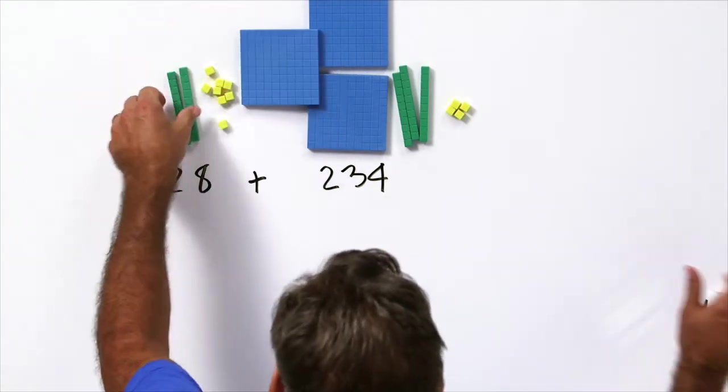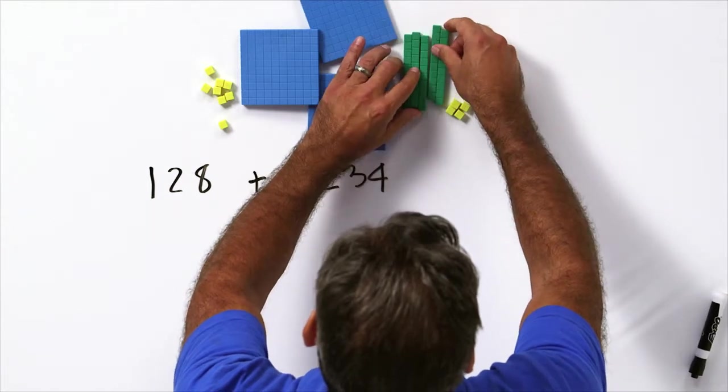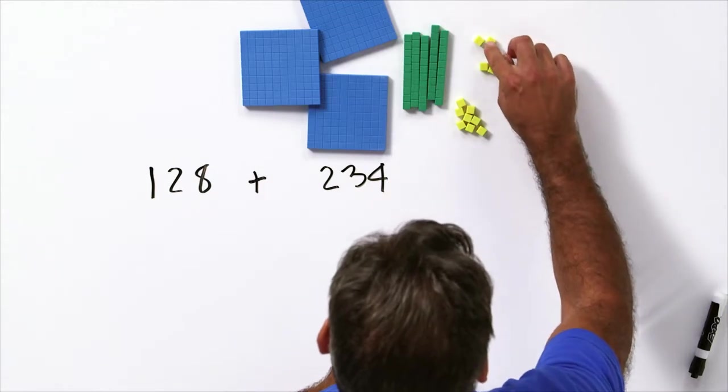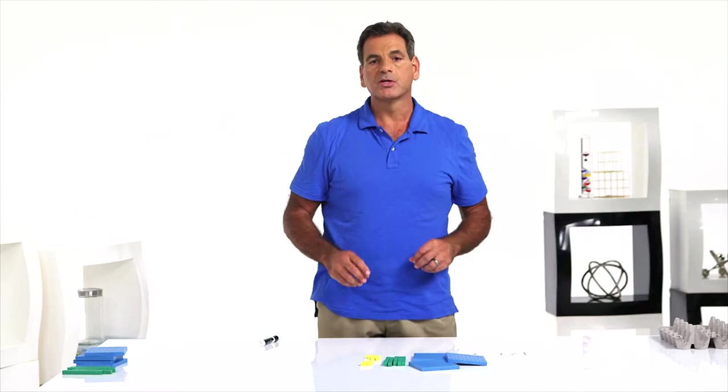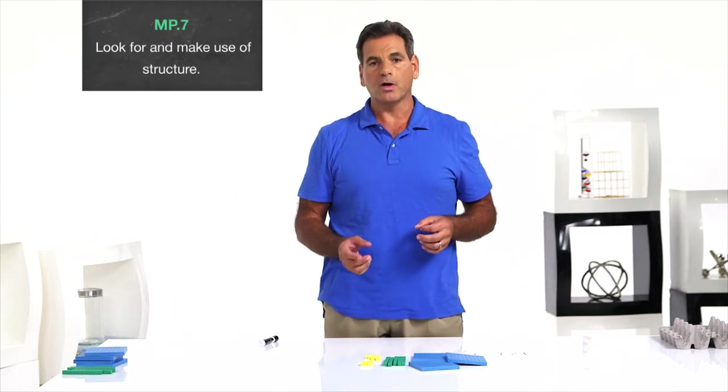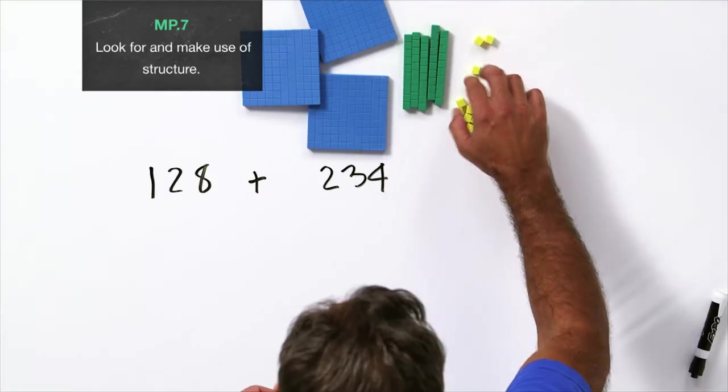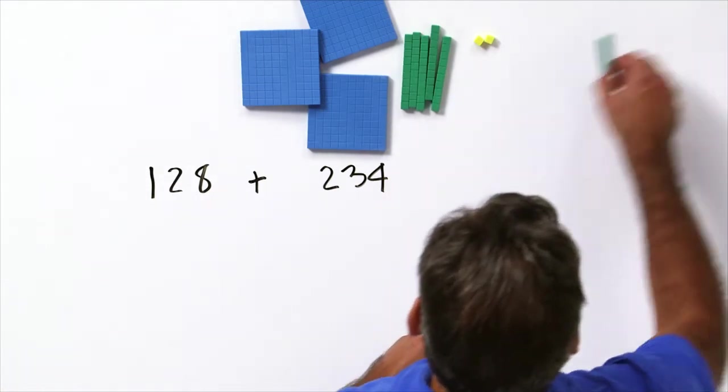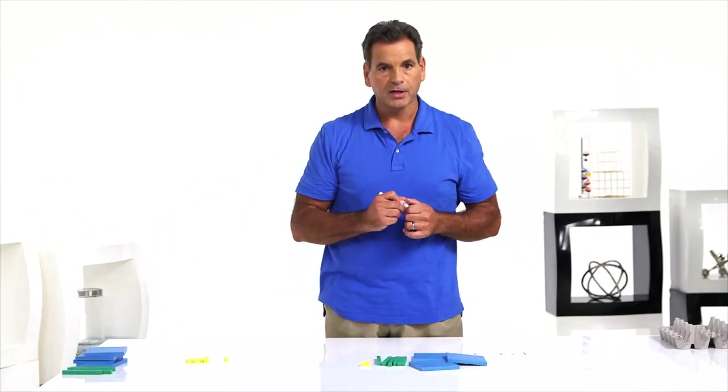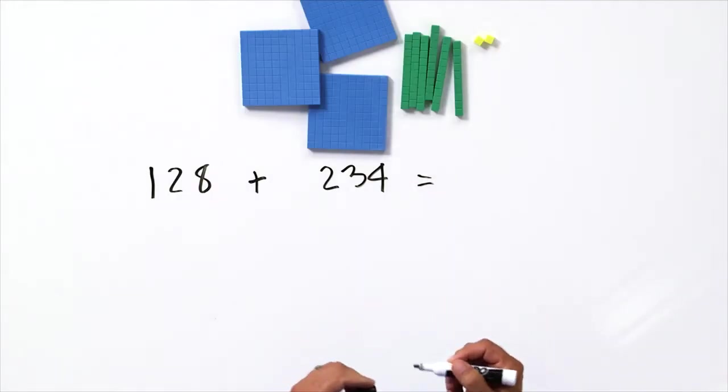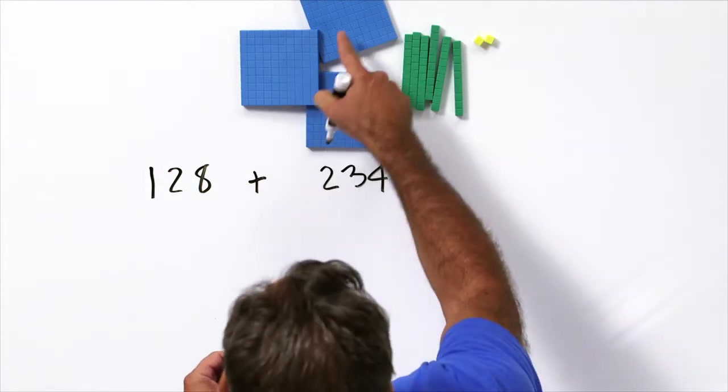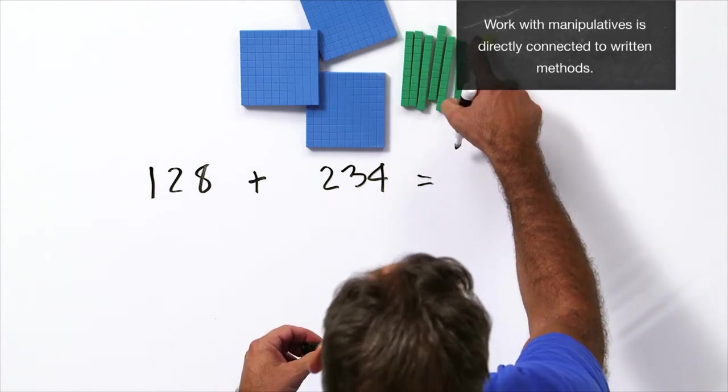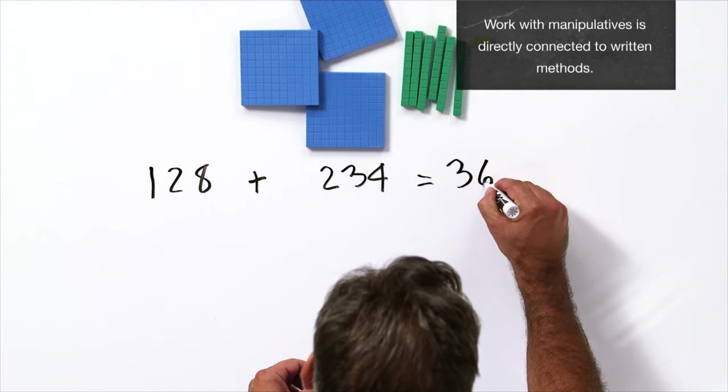And then tell the students to add this together by putting the hundreds with the hundreds, the tens with the tens, and the ones with the ones. So we're going to add now. We have three hundreds, we have six tens, and we have eight, nine, 10, 11, 12 ones. Students know they can only have nine ones in the one place value, so they need to take 10 of them and trade them out for a 10. Now students are ready to write the answer. 128 plus 234 equals 362.